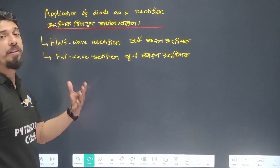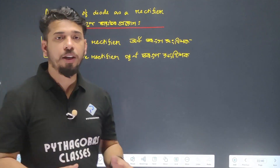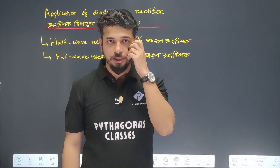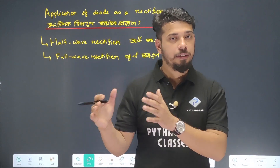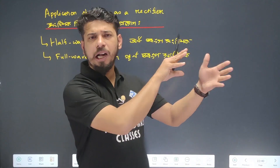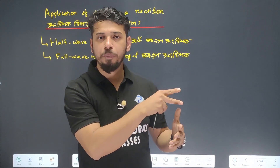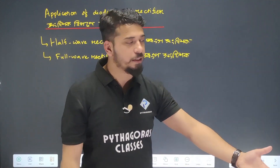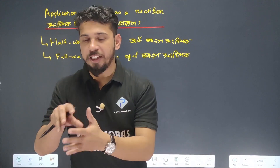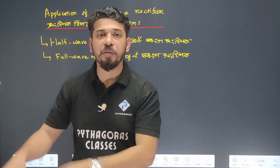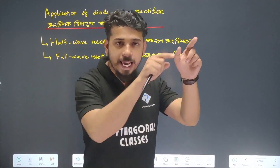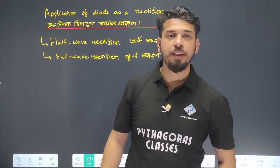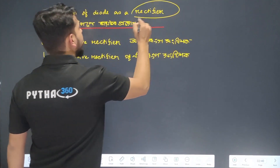Application of diode as a rectifier. A rectifier is a device or circuit which converts AC to DC. If you have more production of power in small blocks, it is very necessary to convert the AC to DC to store this. So this is a rectifier which converts AC to DC.